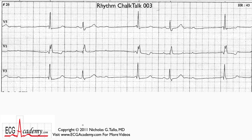This is Rhythm Chalk Talk number three, and I must say it's very challenging. A lot of cardiologists I know wouldn't get this right, but I'm going to help you work your way through it. One big hint is that this is actually the same patient as Chalk Talk number two — that was a case of second-degree type 2 AV block. And type 1 and type 2 second-degree AV block almost never occur in the same patient, at least not at the same time.